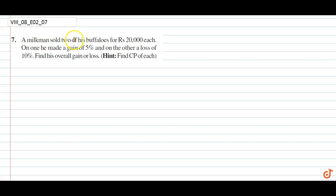The question says a milkman sold two of his buffaloes at rupees 20,000 each. On one he made a gain of 5% and on the other a loss of 10%. Find his overall gain or loss.